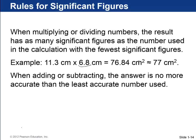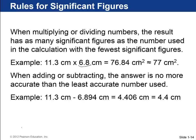If you're adding or subtracting, you use the least accurate number as measured by decimal place. So for example, if you're subtracting 11.3 centimeters minus 6.894 centimeters, on your calculator you will get 4.406. This is specified to the thousandth place. 11.3 is only specified to the tenth place. So this is the one that you use. You round to the tenth place. So you round it off to 4.4 centimeters.